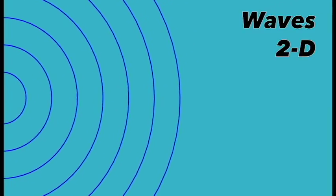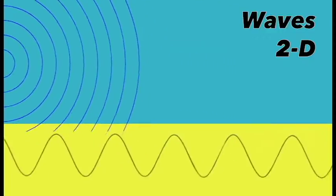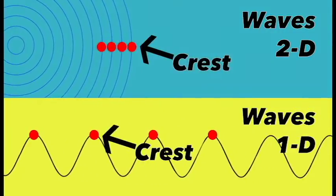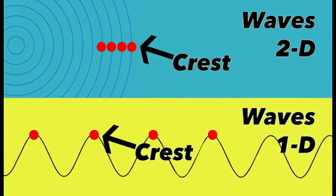But what does that really mean? Let's take a step back. This is a 2D version of a wave. You probably never saw it before, but we need it to show waves interfering during the double-slit experiment. This is the one-dimensional version of the same wave. As you can see, the red dots represent the corresponding crest of the one-dimensional and two-dimensional waves.